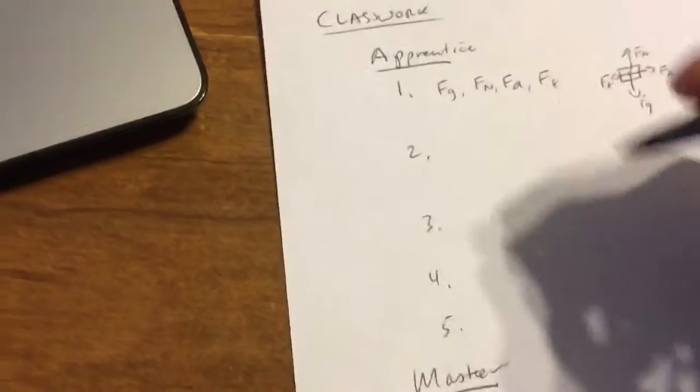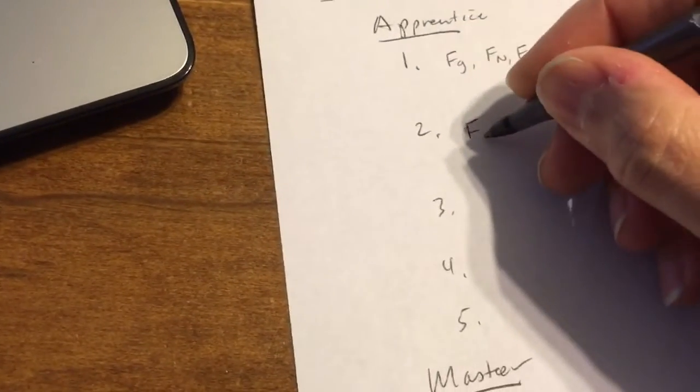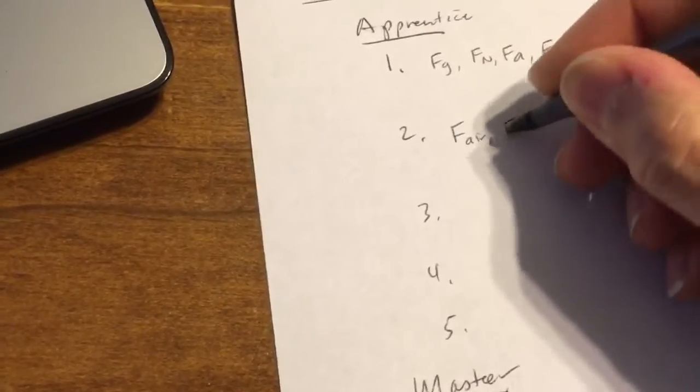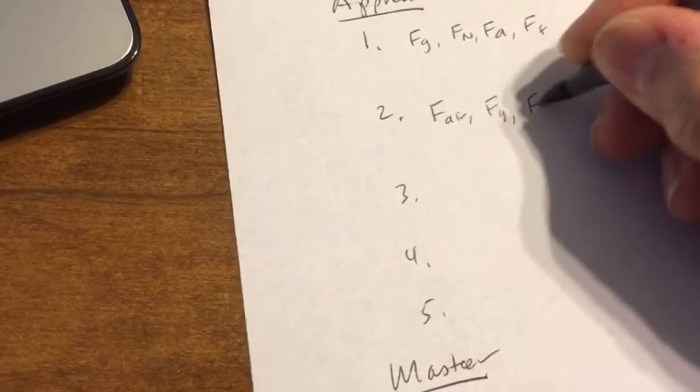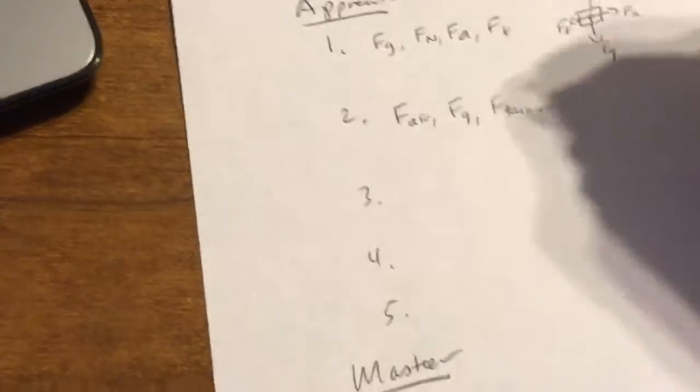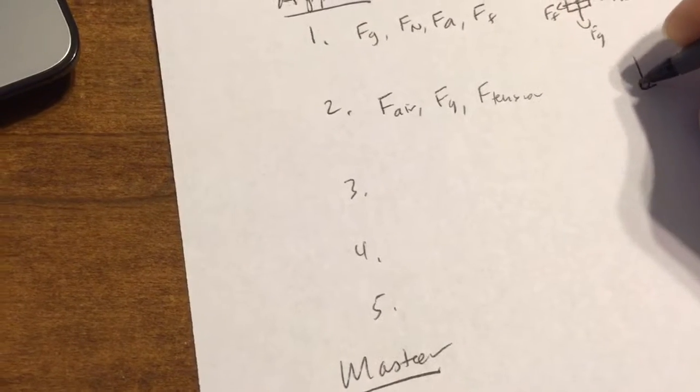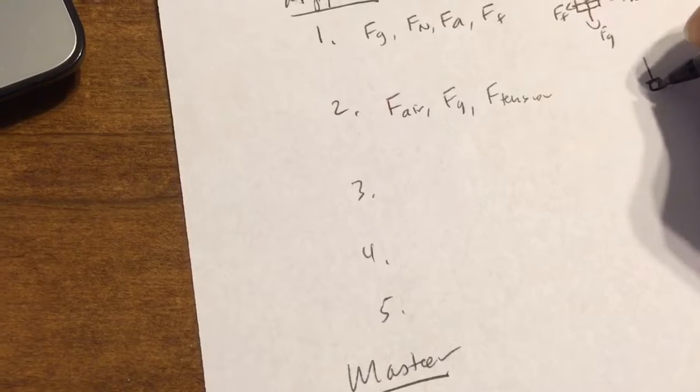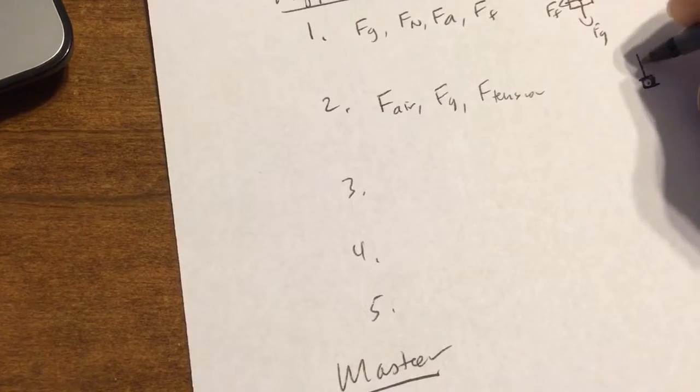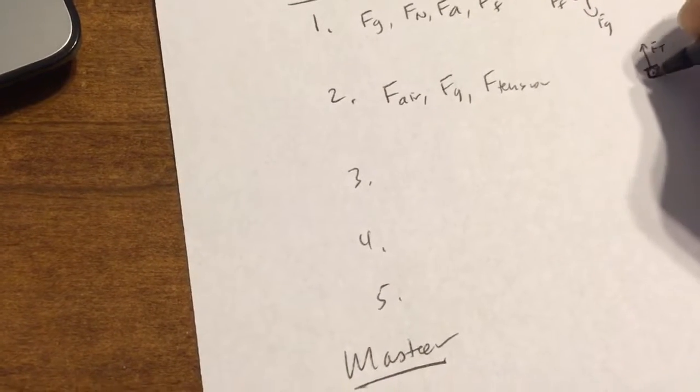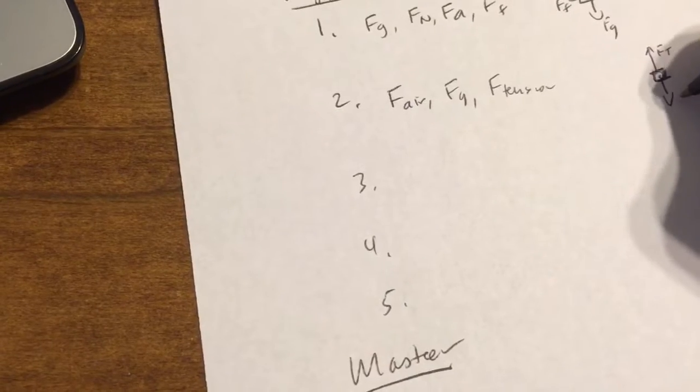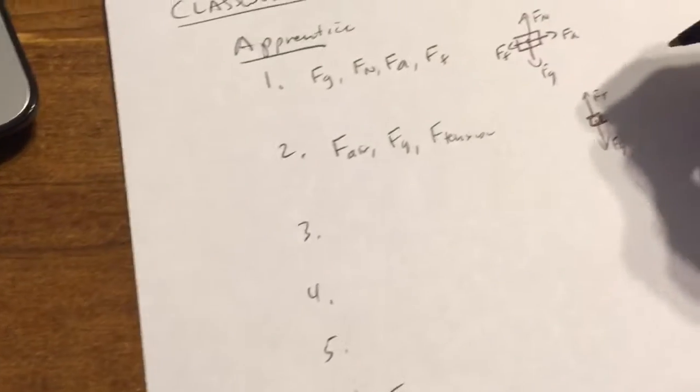And then you want to draw that and also list it. All right, so that would look something like this. We've got air, gravity, and tension. And then here would be my object hanging. So here's my box, right? It's hanging on a string, so tension is going to be up. Gravity is going to be down. Those are going to be equal and opposite.